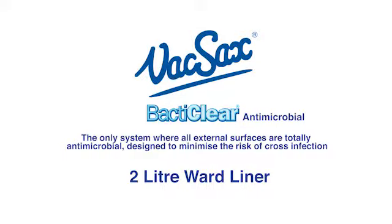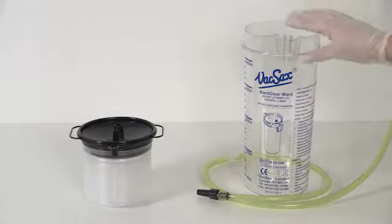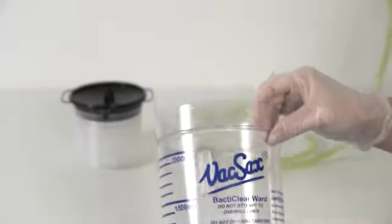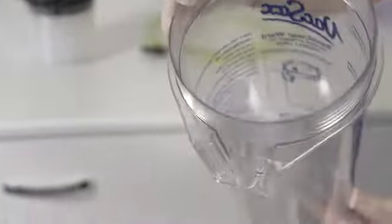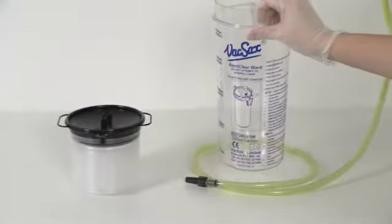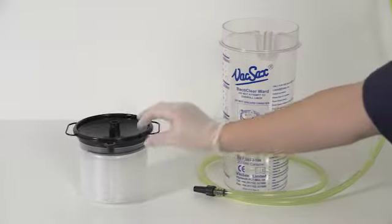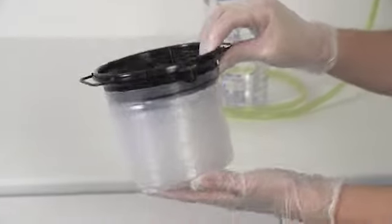The Bacticleer 2.0L Ward Liner. For this you will need one 2.0L Bacticleer Ward canister with rear vacuum port, and one 2.0L Bacticleer Ward liner with a unique smooth surface for ease of cleaning.